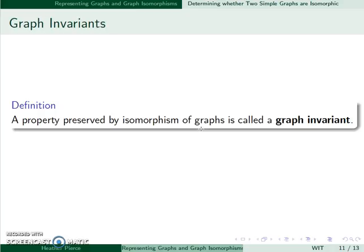We say a property preserved by isomorphisms is a graph invariant, and this can help us decide whether or not two graphs might be isomorphic.